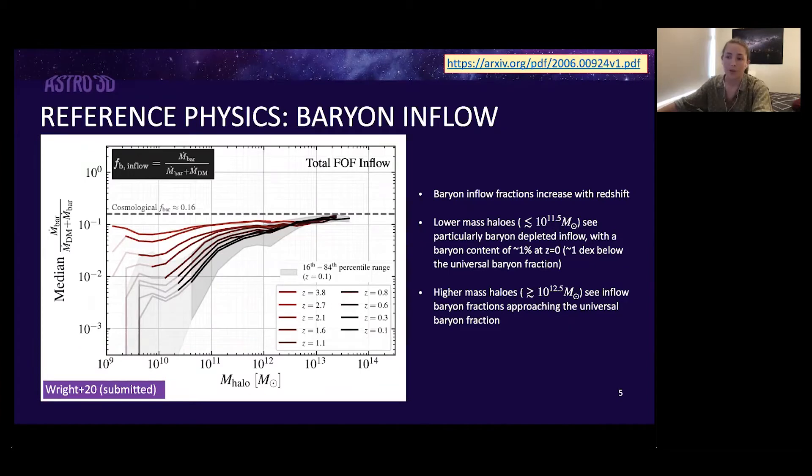On the slide I'm showing the baryon fraction of accreted matter, which is the equation at the top left, and that's as a function of halo mass for various redshifts. If baryon accretion traced dark matter you would expect a flat line roughly at the universal baryon fraction here, so about 16 percent, but obviously that's not what we're seeing. The main feature here is that halos of low mass on average have very baryon poor inflow compared to what we would expect from their dark matter accretion. At about 10 to the 10.5 solar masses we see the baryon inflow constitutes only about one percent of the mass growth of halos, so about one dex lower than what we would expect based on their dark matter accretion rates only.